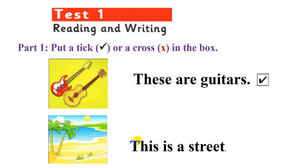Now, picture two. This is a street. Yes or no? Tick or a cross. Now, picture two, the cross. Now next one.